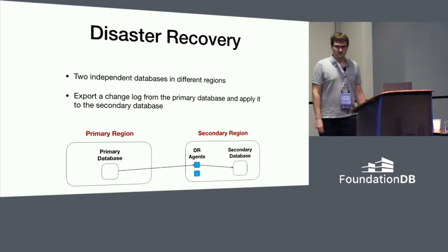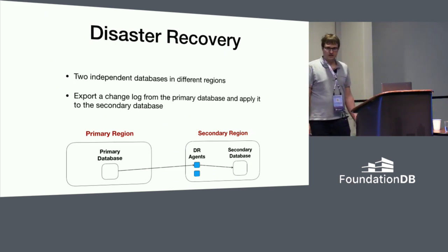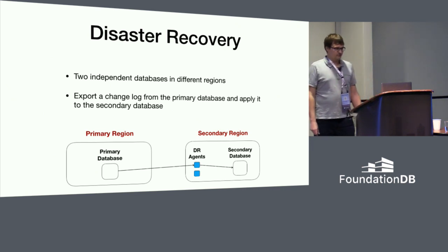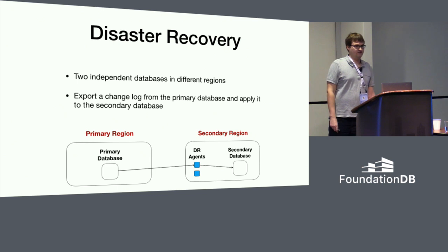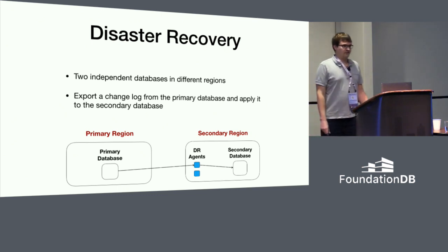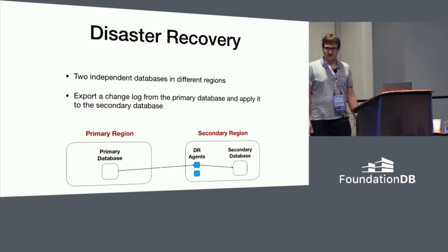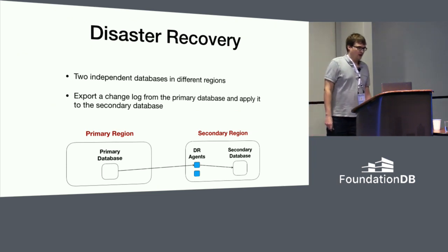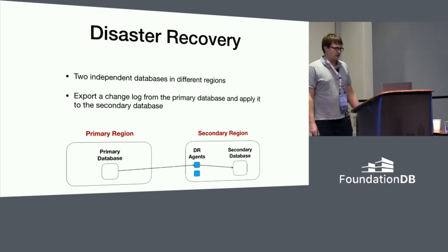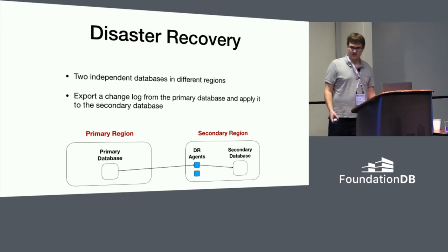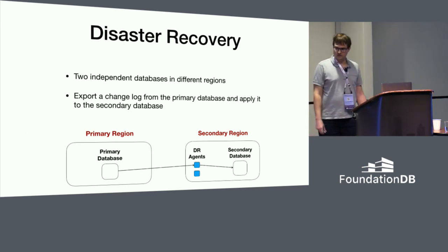Coming to this problem, we had FoundationDB and we're looking at what we can do in multiple regions. The first thought was to take the same approach that a lot of databases like SQL databases use, which is basically to set up some asynchronous replication between your primary region and a completely different FoundationDB database running in the secondary region. These are just completely independent databases, and we're basically shipping the change log from the first one using external DR agents, taking the data and applying it to the other region in version order.